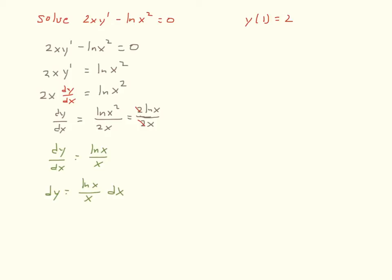I want to separate the variables, so I divide everything by 2x: dy/dx equals ln(x²) over 2x. One of our log properties is that the exponent can be brought out in front, so that 2 comes out and the 2s cancel. I'm left with dy/dx equals ln(x)/x, or multiplying by dx: dy equals ln(x)/x · dx.